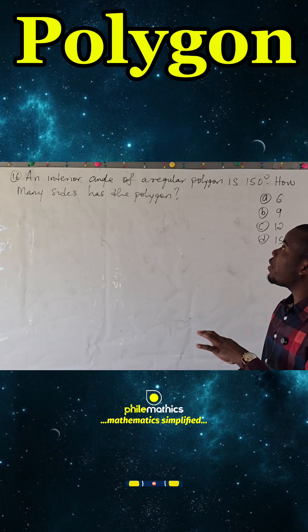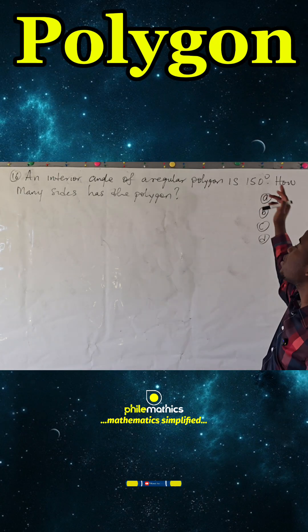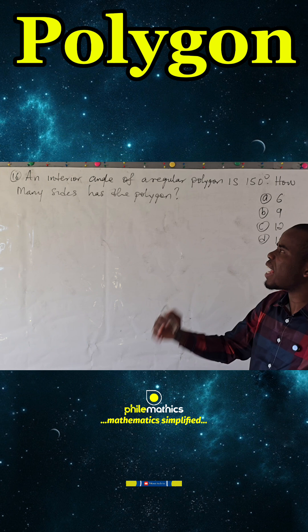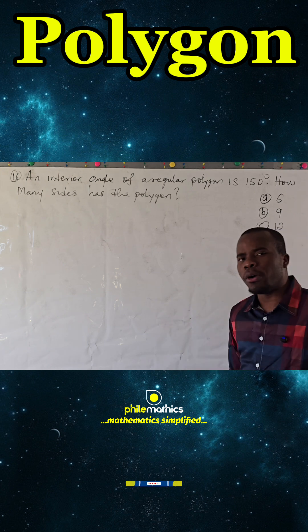An interior angle of a regular polygon is 150 degrees. How many sides has the polygon?